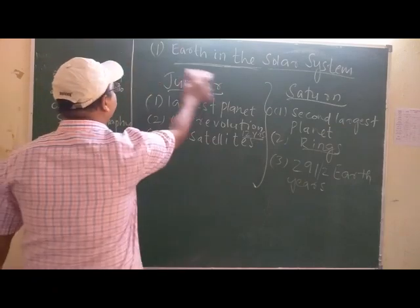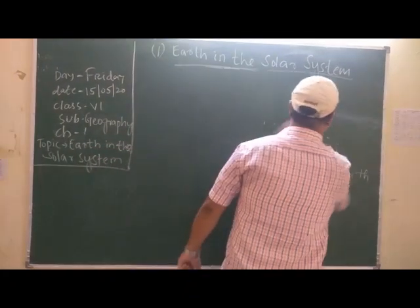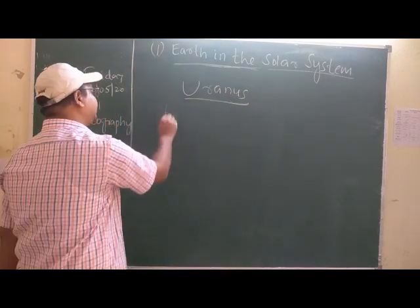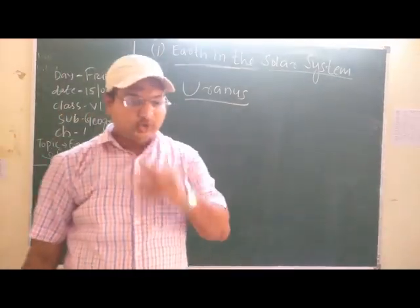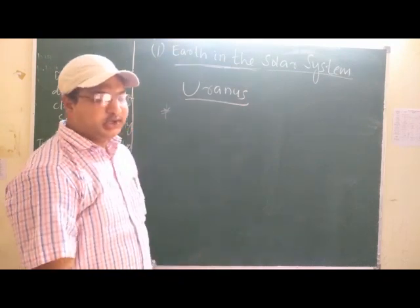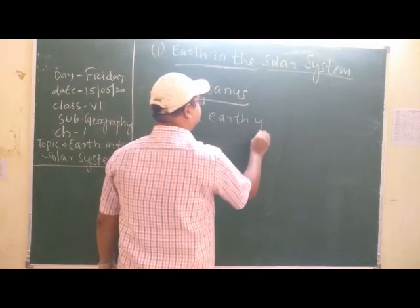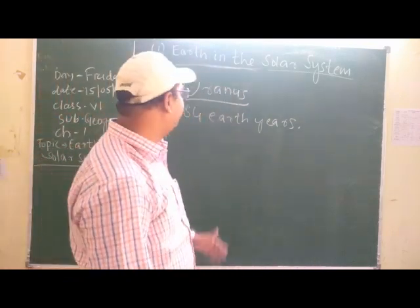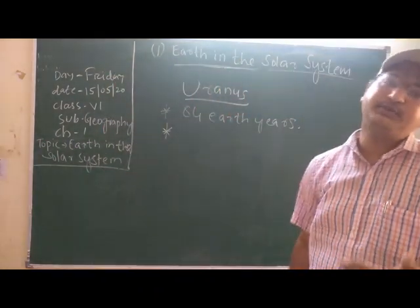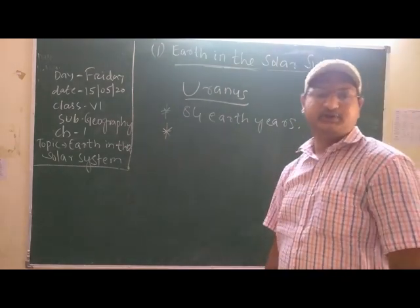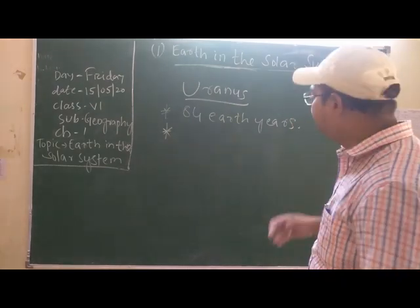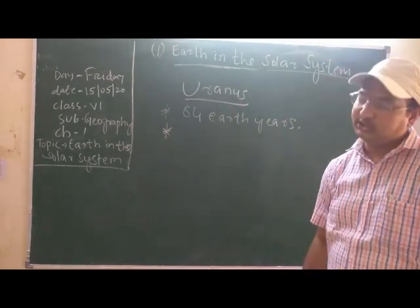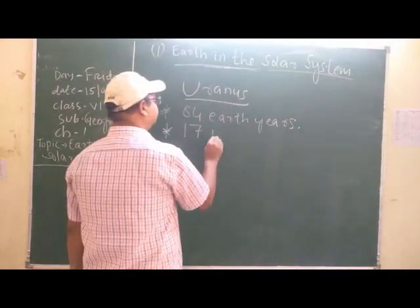Next we will study about Uranus. Uranus is the second largest planet before Neptune. Uranus completes one revolution around the sun in 84 Earth years. Scientists have found that there are different types of clouds on Uranus. Like other gas planets, Uranus also has rings made up of large dust particles. And Uranus has 17 moons — our Earth has only one moon as its natural satellite, but Uranus has 17 moons.